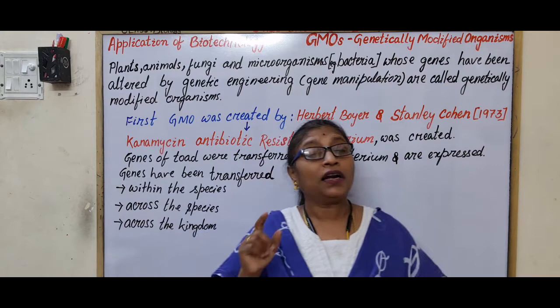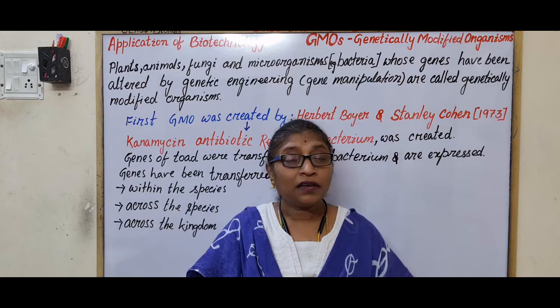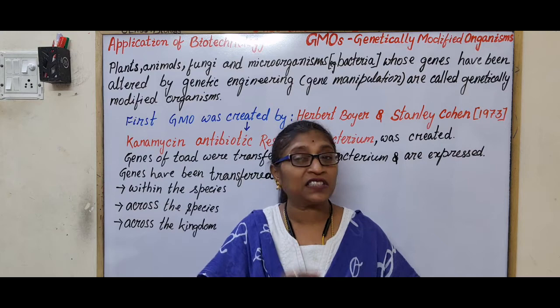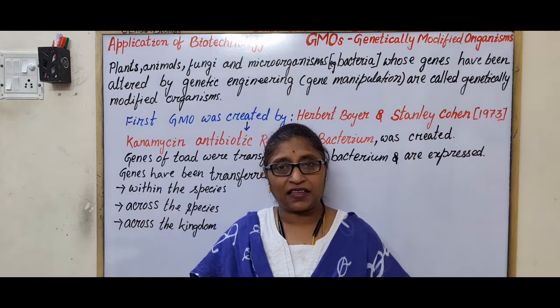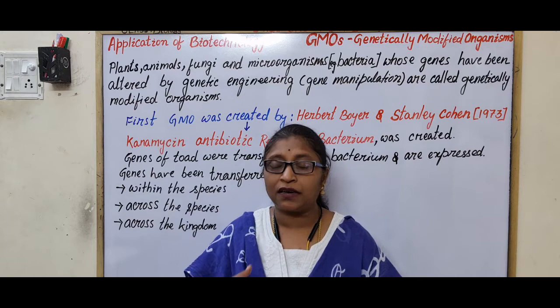Somatic cell gene therapy was first done in a four-year-old girl, Ashanthi DeSilva, for SCID — severe combined immunodeficiency — which was caused due to the deficiency of adenosine deaminase (ADA). Germ cell gene therapy is not so common because of ethical issues.